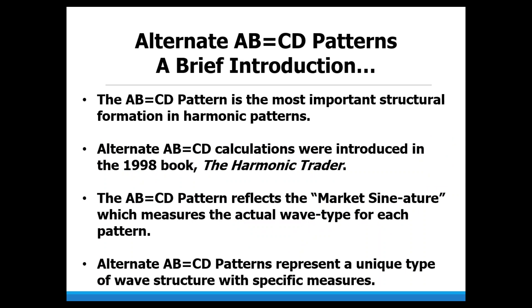The ABCD pattern itself is the most important structural formation in all harmonic patterns, but we get situations where alternate variations of that primary structure can occur. The alternate ABCD patterns represent a unique type of wave structure with specific measures used only in specific situations. The ABCD pattern reflects a concept termed 'market signature' — a sine wave analysis of movements that relates to measuring the actual wave type for each pattern.